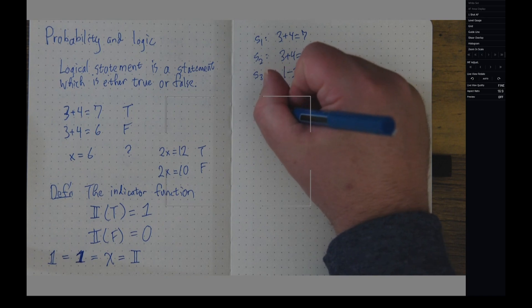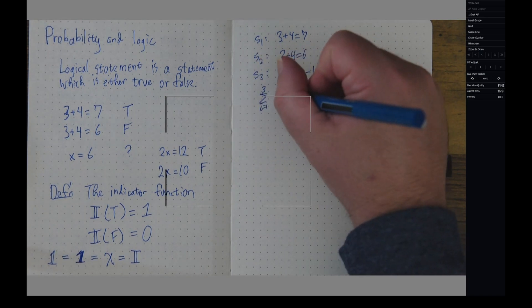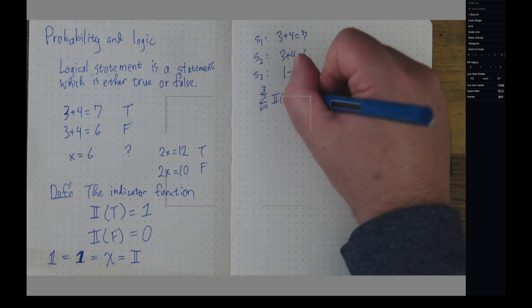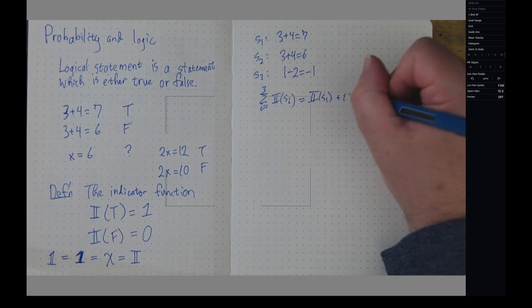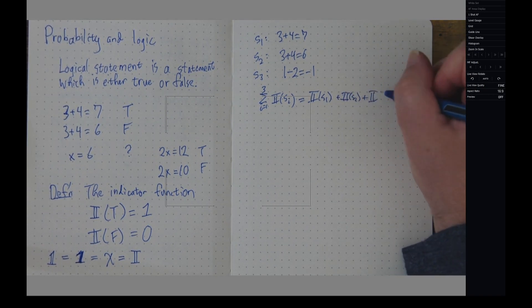Notice that if I take the sum as i goes from 1 to 3 of the indicator functions of those statements, I'll get the indicator function of S1 plus the indicator function of S2 plus the indicator function of S3.